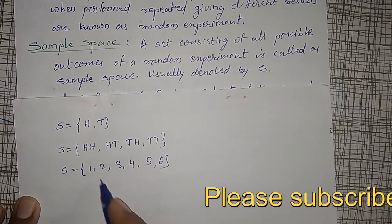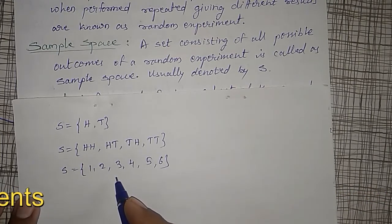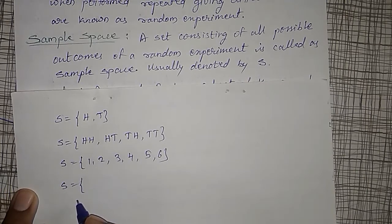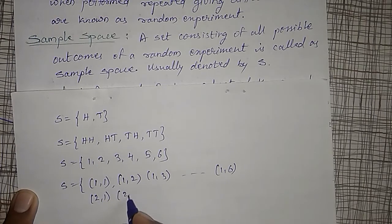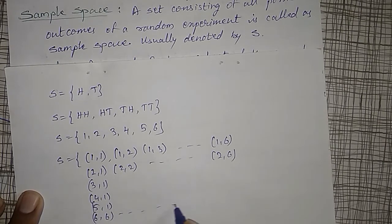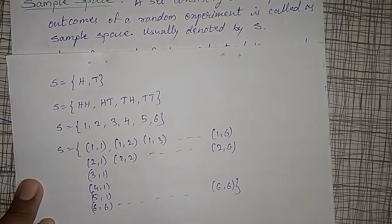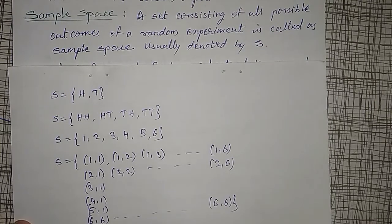The set of all possible outcomes whenever you are doing a random experiment is known as the sample space. Another example: whenever two dice are rolled at a time, you may get (1,1), (1,2), (1,3) up to (1,6), then (2,1), (2,2) up to (2,6), similarly (3,1), (4,1), (5,1), (6,1), up to (6,6) — a total of 36 outcomes. This set together is known as the sample space.